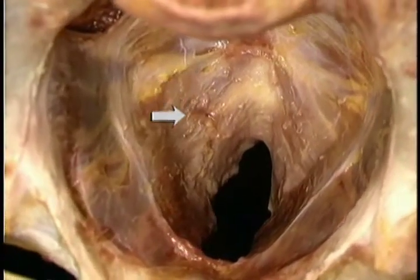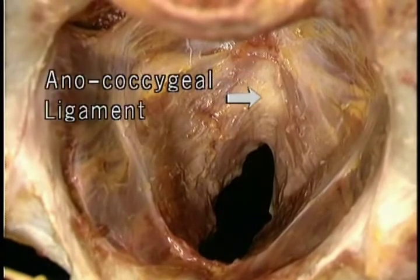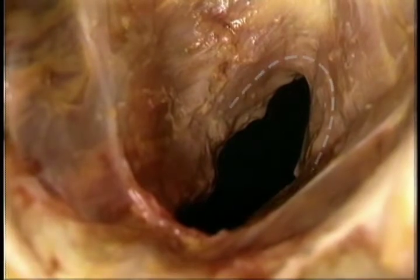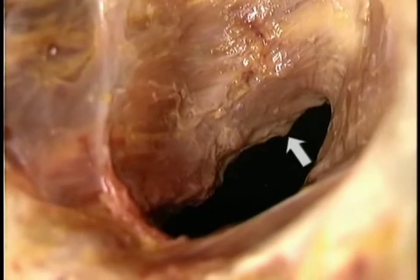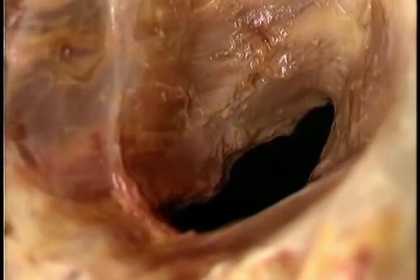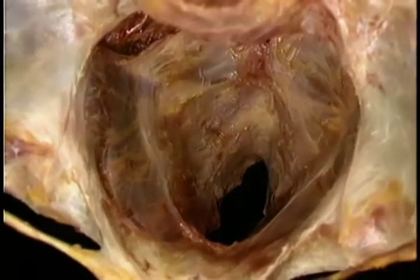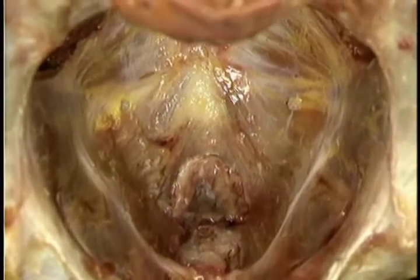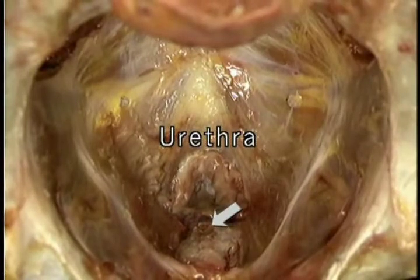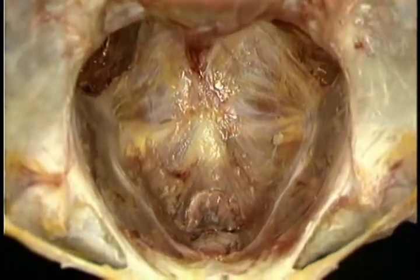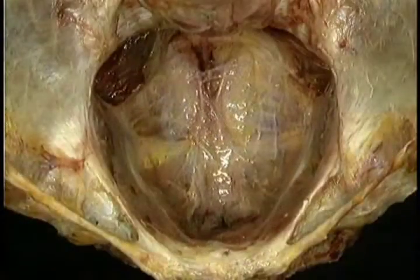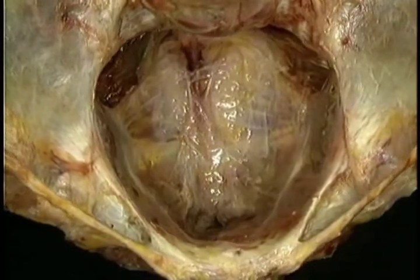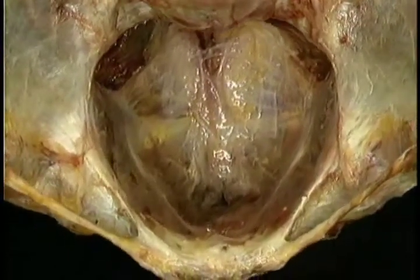The fibers of levator ani which arise more posteriorly unite in the midline with the anococcygeal ligament. The fibers which arise more anteriorly form a loop which passes around the back of the urogenital hiatus. Some fibers along the edge of the hiatus attach to the sides of the rectum, the urethra, and in the female, the vagina. Here's the lowest part of the rectum and the urethra, with the lowest part of the prostate in front of it. The levator ani and coccygeus muscles are covered over by a dense layer of pelvic fascia, which completes the pelvic diaphragm on the inside.